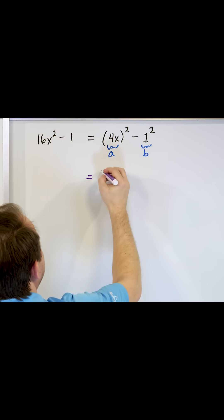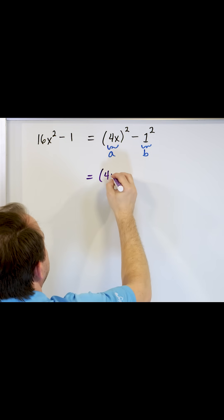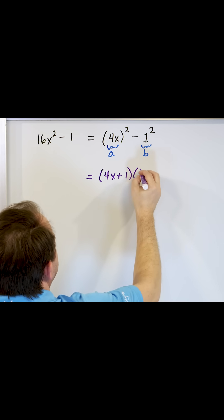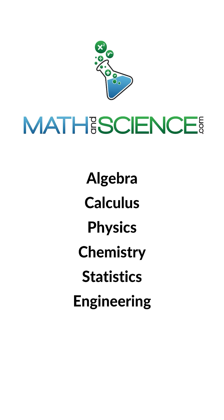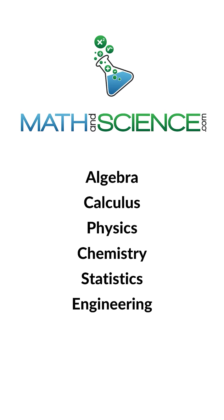Now we know what a and b are, so we write it simply as 4x plus 1 times 4x minus 1. That's the factorization. Learn anything at mathandscience.com.